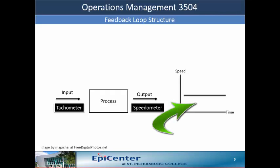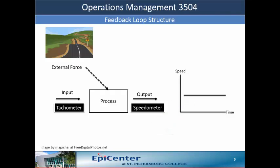Let's apply an external force to the system. Imagine, if you will, you drive along and you run into a hill. If the input does not change, the car will start picking up speed, shown by the red line, and at some point will go out of control. This is called a reinforcing loop.